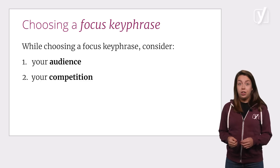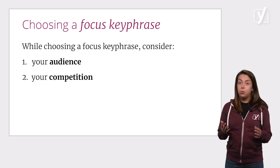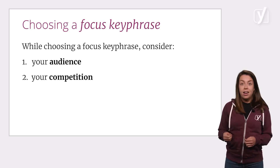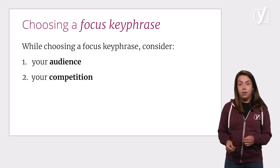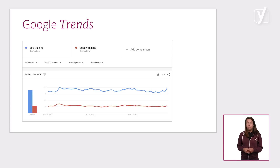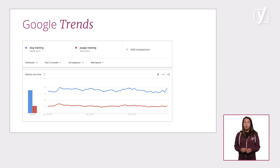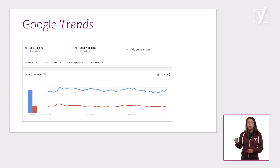First of all, you should consider your audience. What are they looking for? What are they searching for? Which words are they using? You should get inside the heads of your audience and try to figure this out. You can use tools like Google Trends to analyze which words people are using. With Google Trends, you can compare keyphrases to see which one people search for most often. For example, if we compare 'puppy training' with 'dog training', it's clear that people search for 'dog training' more often. So for the dog training school in Bakersfield, it could be a good idea to optimize for 'dog training' instead of 'puppy training'.